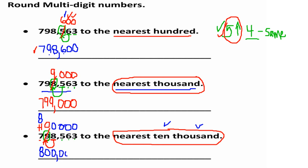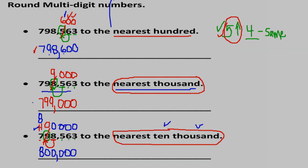We just have to remember: if the number becomes a two-digit number, we carry the one over to the next larger place value. In this case it's the hundred thousands place. That's our answer.